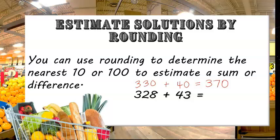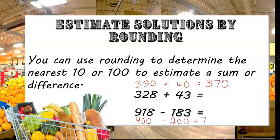Let's try 918 minus 183. We could round 918 to 900 and then round 183 to 200. Then, if we subtract 900 minus 200, we get 700. So that means 918 minus 183 is about 700. These answers aren't exact, but it lets us quickly and mentally get really close to the right answer.